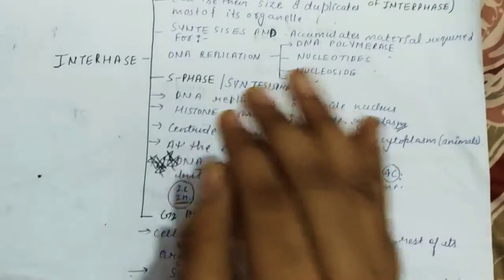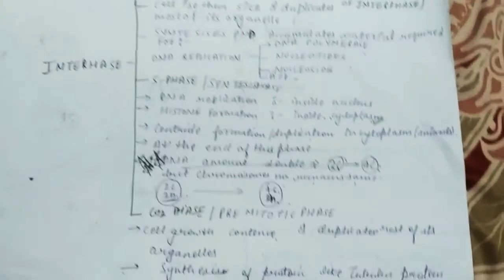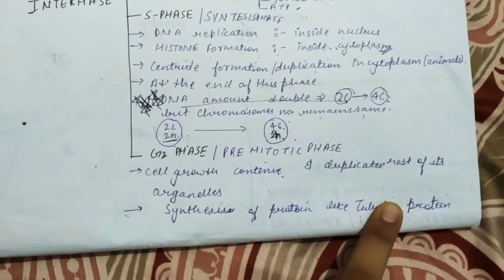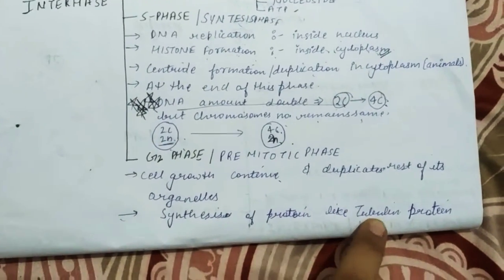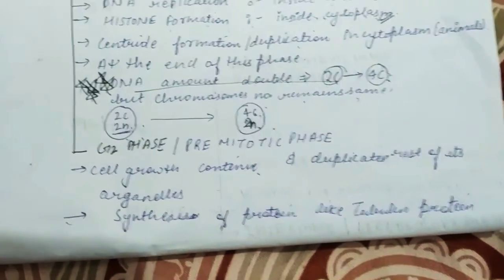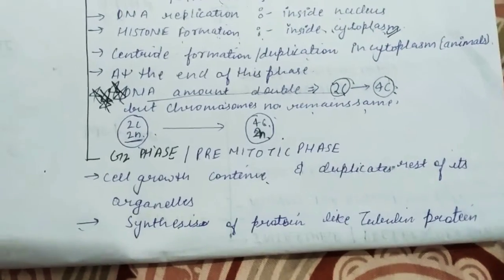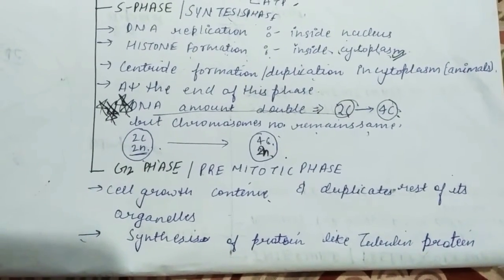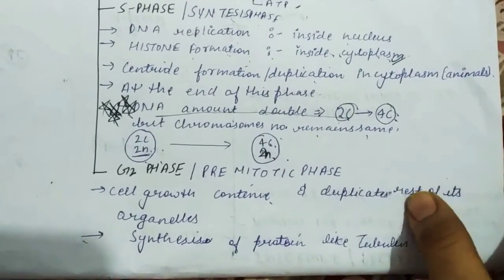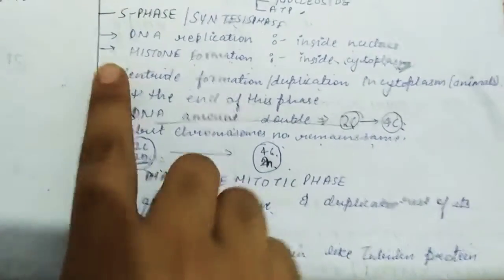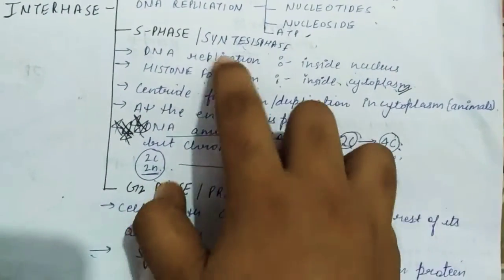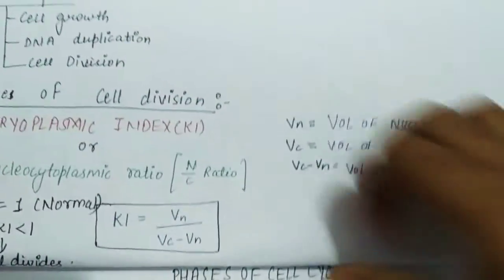In G2 phase, synthesis of proteins occurs, like tubulin protein. Tubulin protein forms microtubules. What are microtubules? Spindle fibers. I will tell you about M phase in the next video, covering metaphase stage, anaphase stage, microtubules and spindle fibers, centrioles, and histone proteins used in DNA packaging.